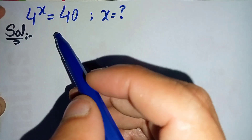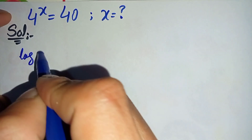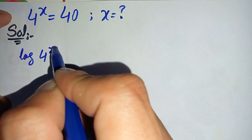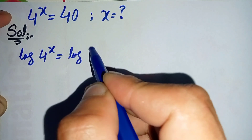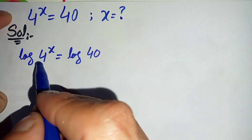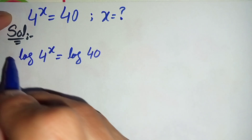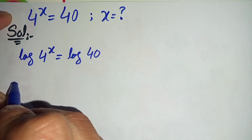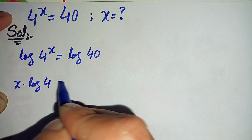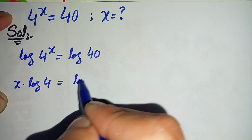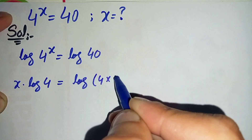In the first approach, we will take log on both sides of this equation. So log of 4 raised to power x is equal to log of 40. We will use a logarithm property on the left hand side and shift this power to the front of the log, so this will become x times log of 4 is equal to log of 40, which we can write as 4 times 10.